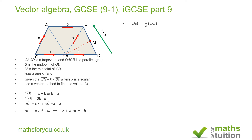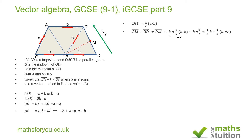Now I can find BM by going from B to D and then from D to M. BD equals b, and DM equals one half of a minus b. So BM equals b plus one half of a minus b. Expanding the bracket: b plus one half a minus one half b, which simplifies to one half a plus one half b.